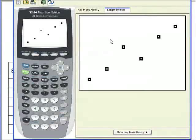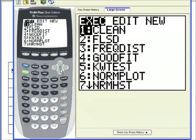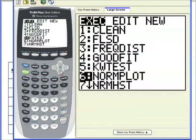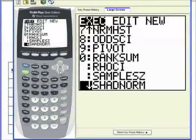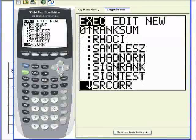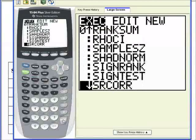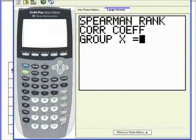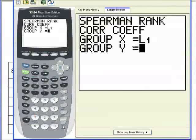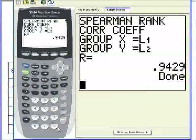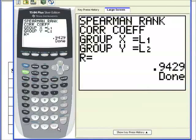So let's go ahead and go to Program. And the program is SRCore. There it is—SRCore for Spearman's Correlation. Select it, run it. Group X, where's that? Well, that's my L1 data. And group Y, that's my L2 data. Hit enter.